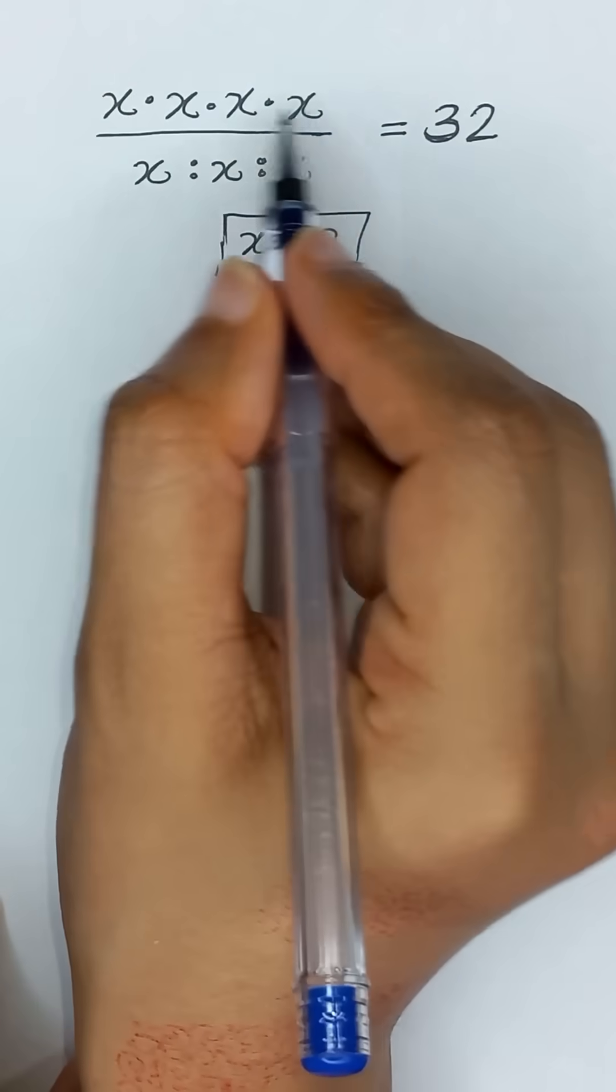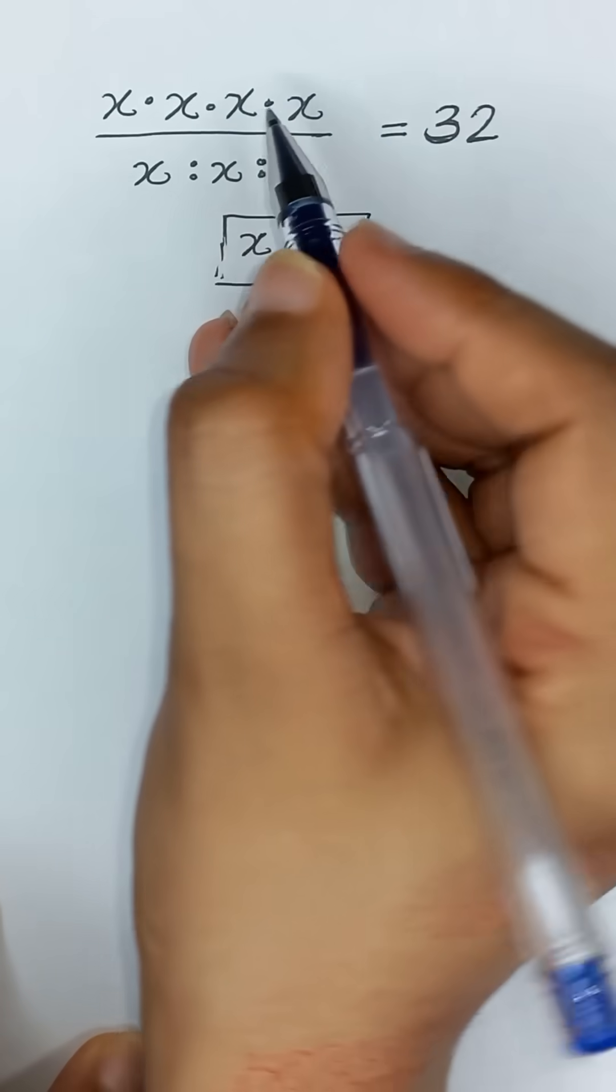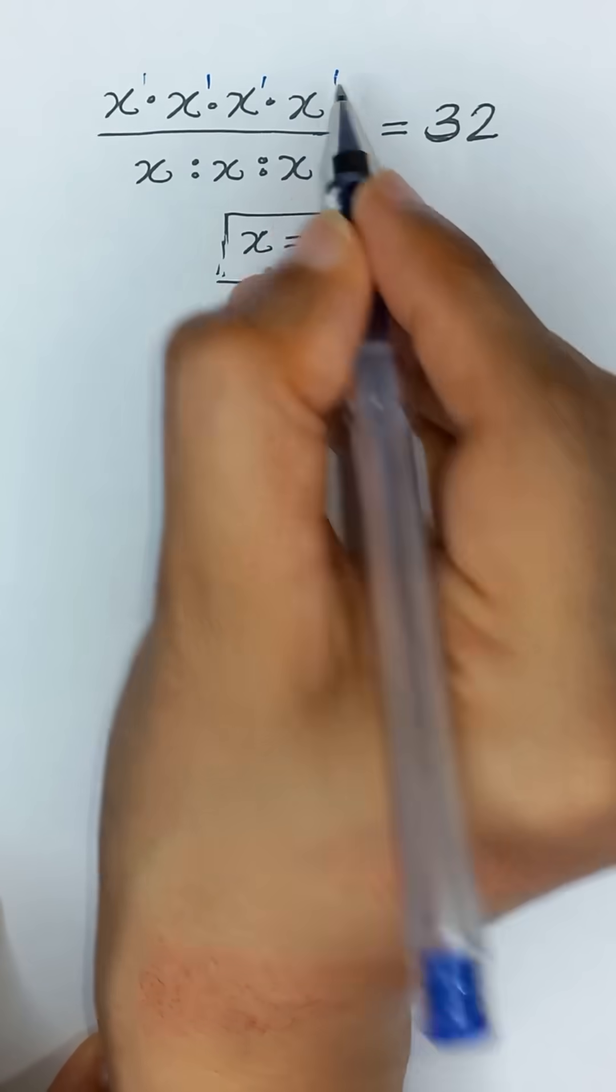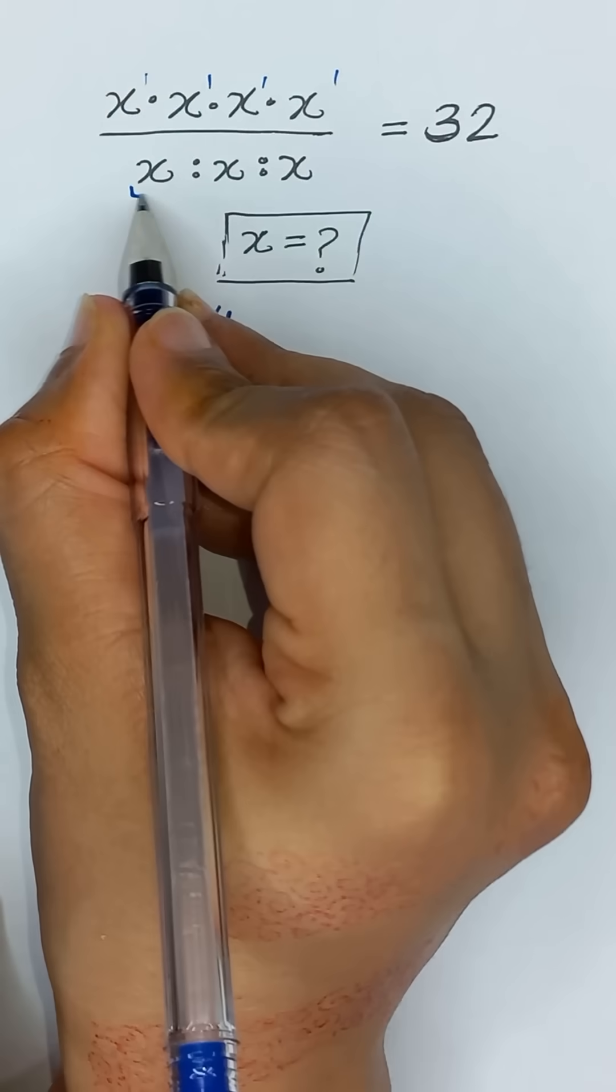The bases are the same and between these terms we have multiplication, so we can add the powers. 1 plus 1 plus 1 plus 1 becomes x to the power 4, divided by we can write...